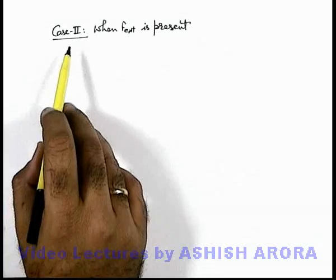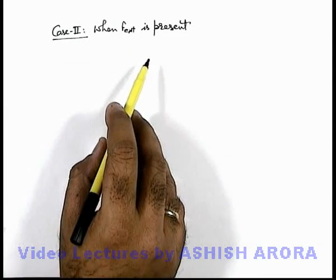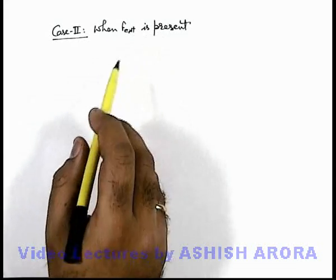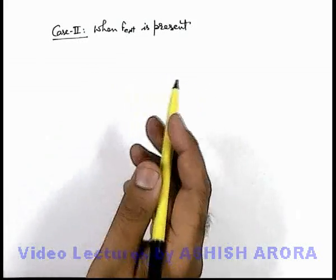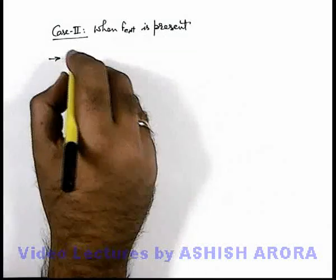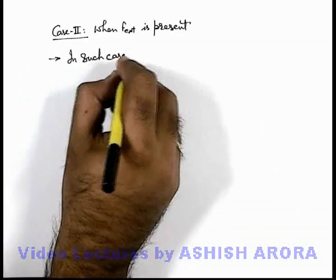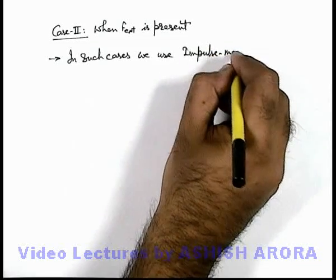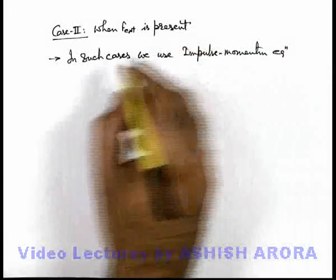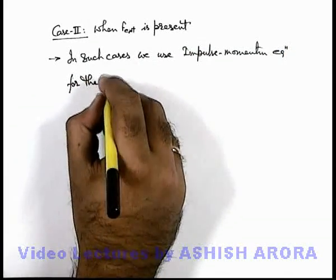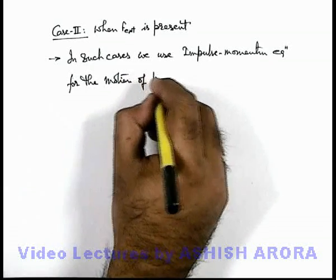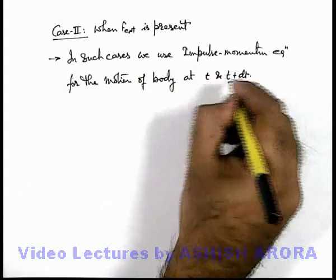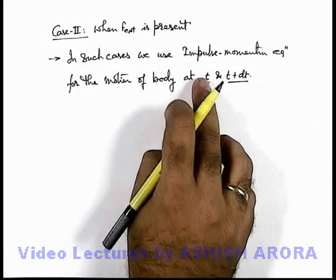Now let's discuss the second case: when external force is present on the system from which mass is changing. As we have studied, if external force is absent we use simply conservation of momentum at time t and t plus dt during the motion. Similarly, when external force is present, in such cases we use the impulse-momentum equation for the motion of the body at an intermediate time t and t plus dt.